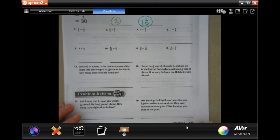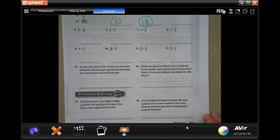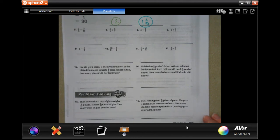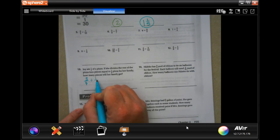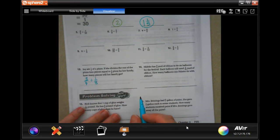We are going to go down to number 13. And it says, Joy ate a quarter of a pizza. If she divides the rest of the pizza into, I'm sorry, into equal. Joy ate one quarter of a pizza. If she divides the rest of the pizza into pieces equal to 1 eighth pizza for her family, how many pieces will her family get? So if she ate one quarter, then there's three quarters left. If she's dividing that into 1 eighth size pieces, then you can keep, change, and flip.